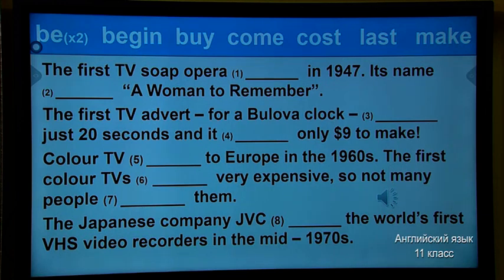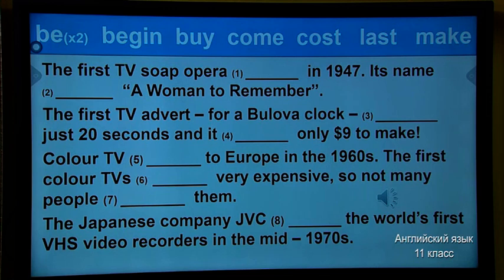Colored TV came to Europe in the 1960s. The first colored TVs were very expensive, so not many people bought them. The Japanese company JVC made the world's first VHS video recorders in the mid-1970s.